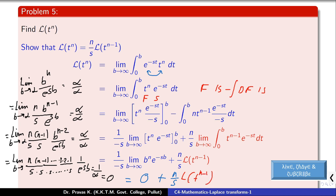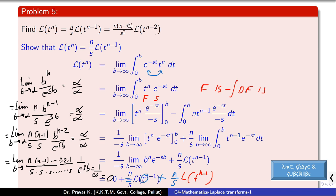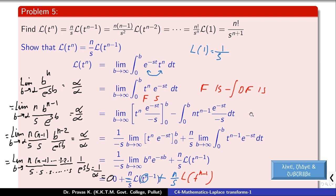Now we can evaluate L{t^n} using this recursive formula: L{t^n} = (n/s) L{t^(n-1)} = n(n-1)/s² times L{t^(n-2)}, continuing until we reach n!/s^n times L{1}. Since we already have L{1} = 1/s, replacing it gives L{t^n} = n! / s^(n+1). So the Laplace transform of t raised to n is n factorial divided by s raised to n plus 1, derived using the recursive formula.